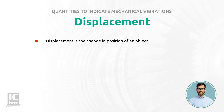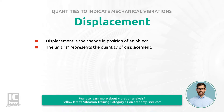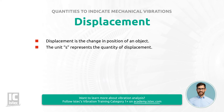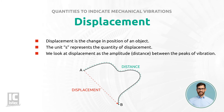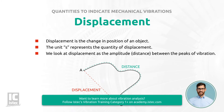Displacement is the change in position of an object. The unit S represents the quantity of displacement. From a vibration perspective, we look at displacement as the amplitude, distance, between the peaks of vibration. Displacement should not be confused with distance. Distance can be seen as how far an object has traveled, whereas displacement is the change in position of an object. This image provides a good visualization of how they differ.